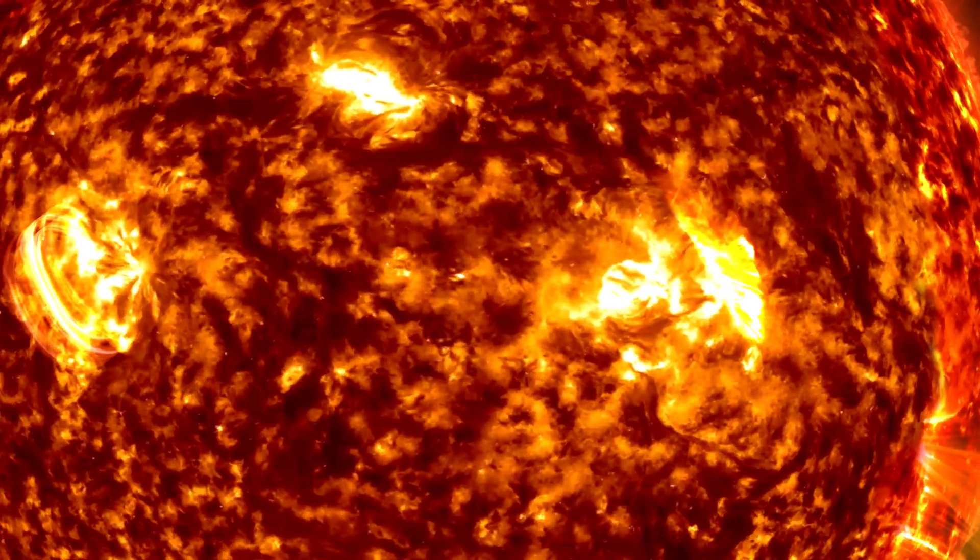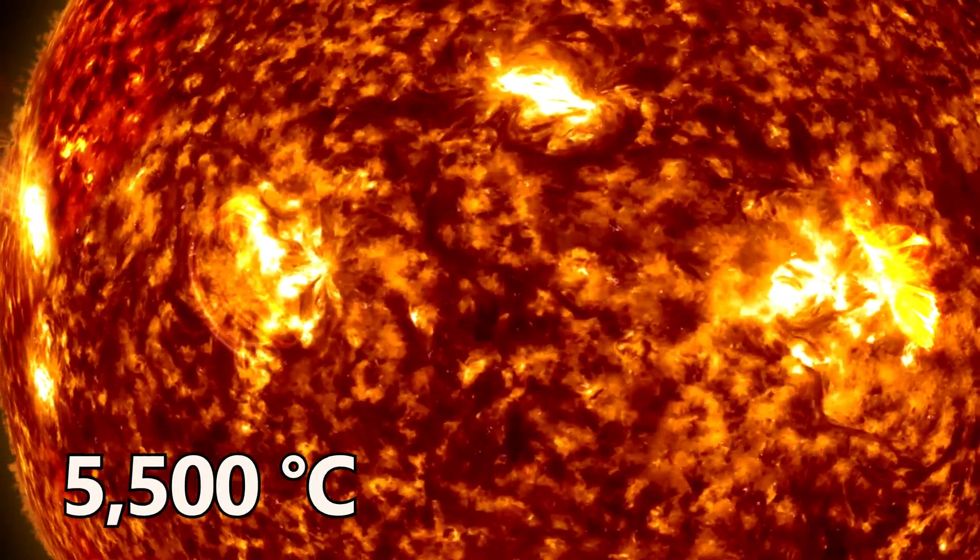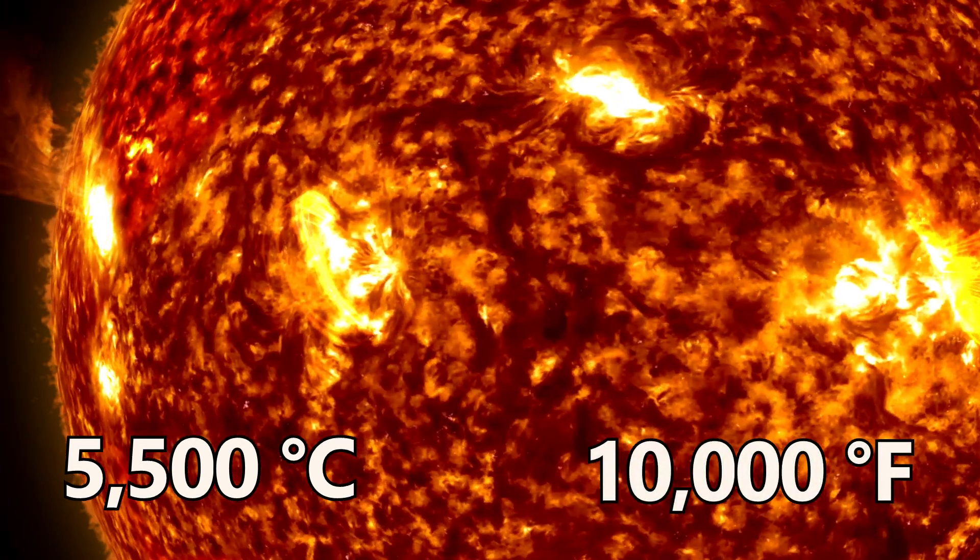The Sun's surface, or photosphere, is cooler but still very hot, at around 5 and a half thousand degrees Celsius, or 10,000 degrees Fahrenheit.